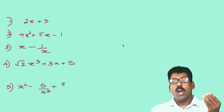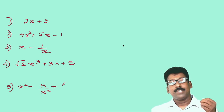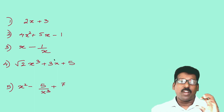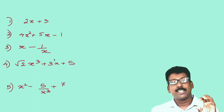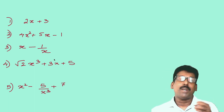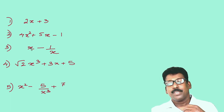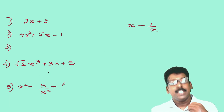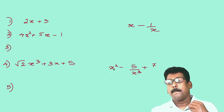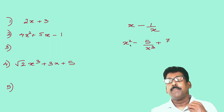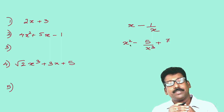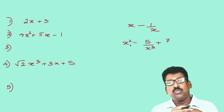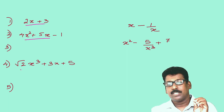Here you have five expressions. Are they all polynomials? Out of these five, two are not polynomials. Can you say which ones are not polynomials? Here x minus 1/x is not a polynomial. Similarly, x² minus 5/x³ plus 7 is not a polynomial.